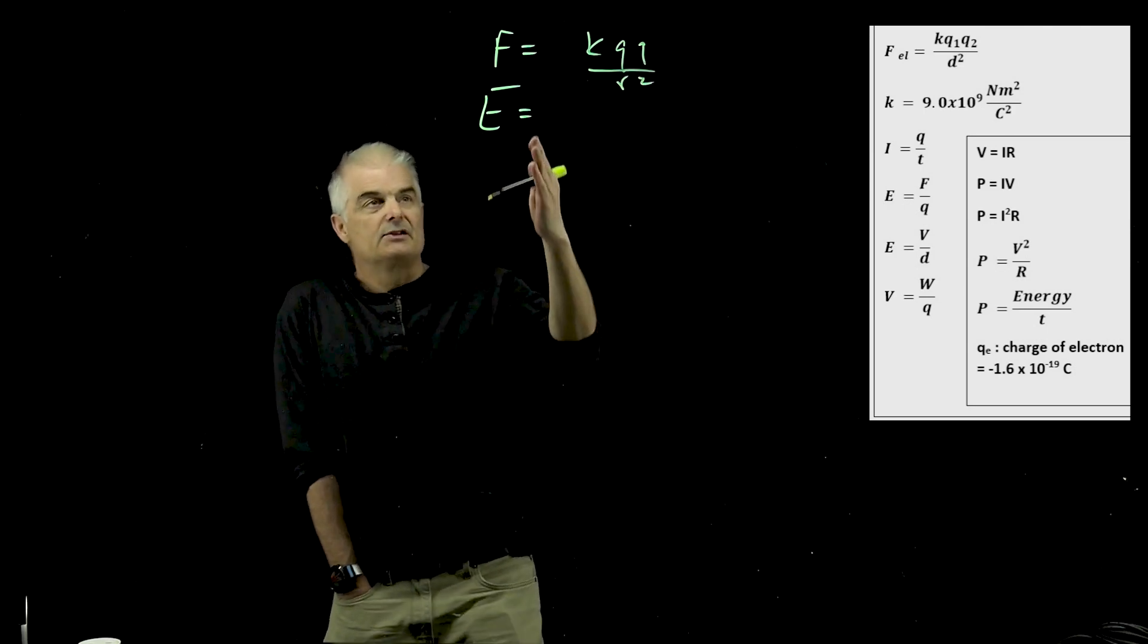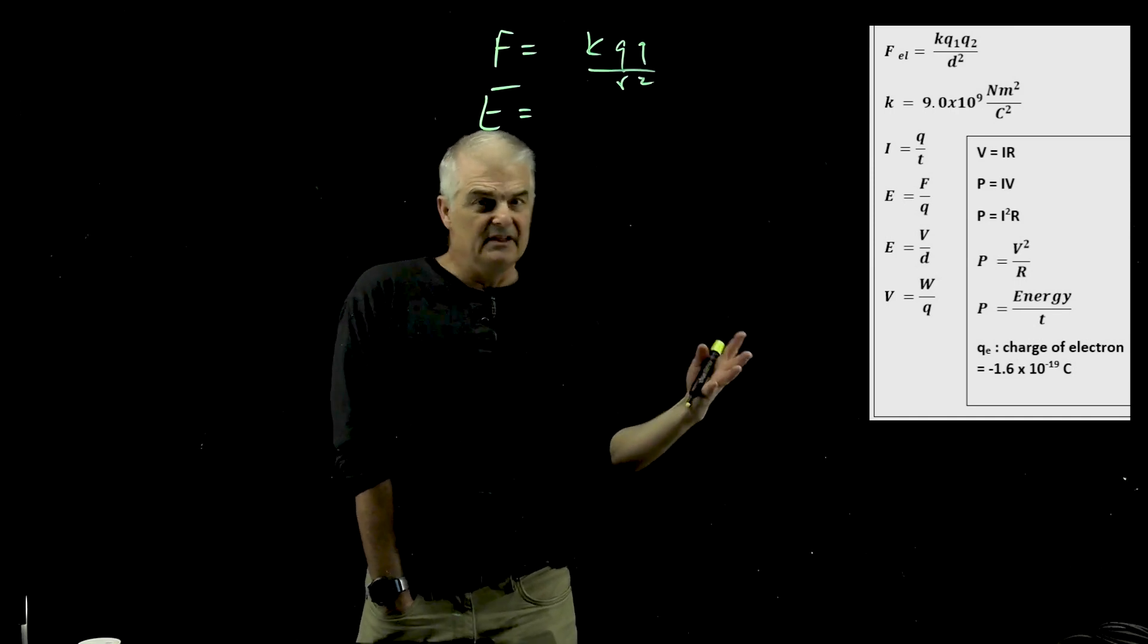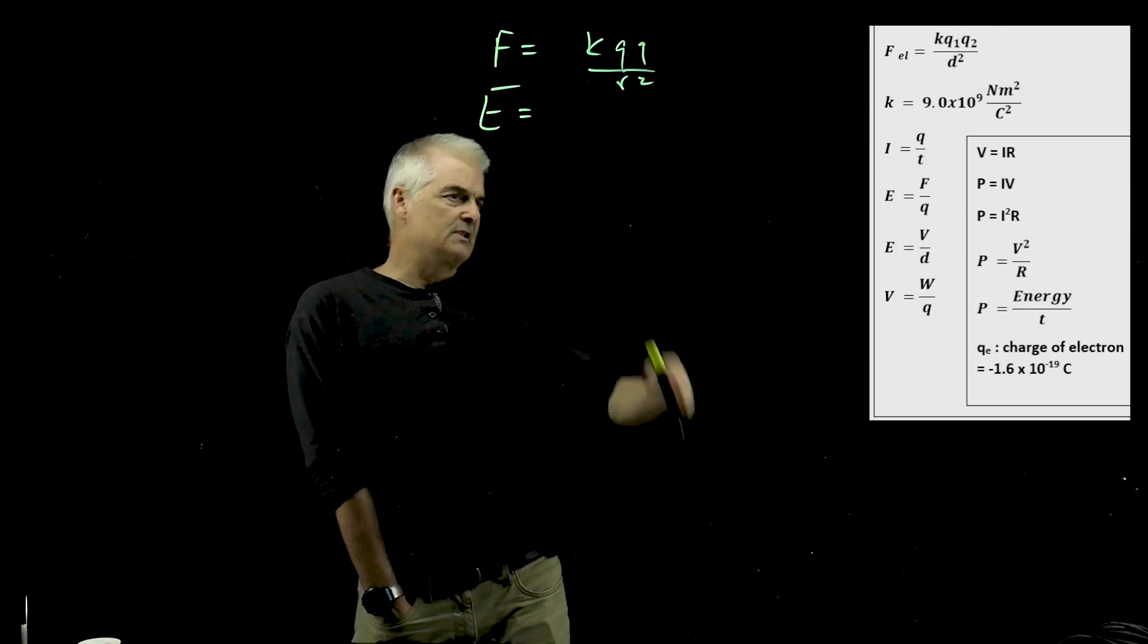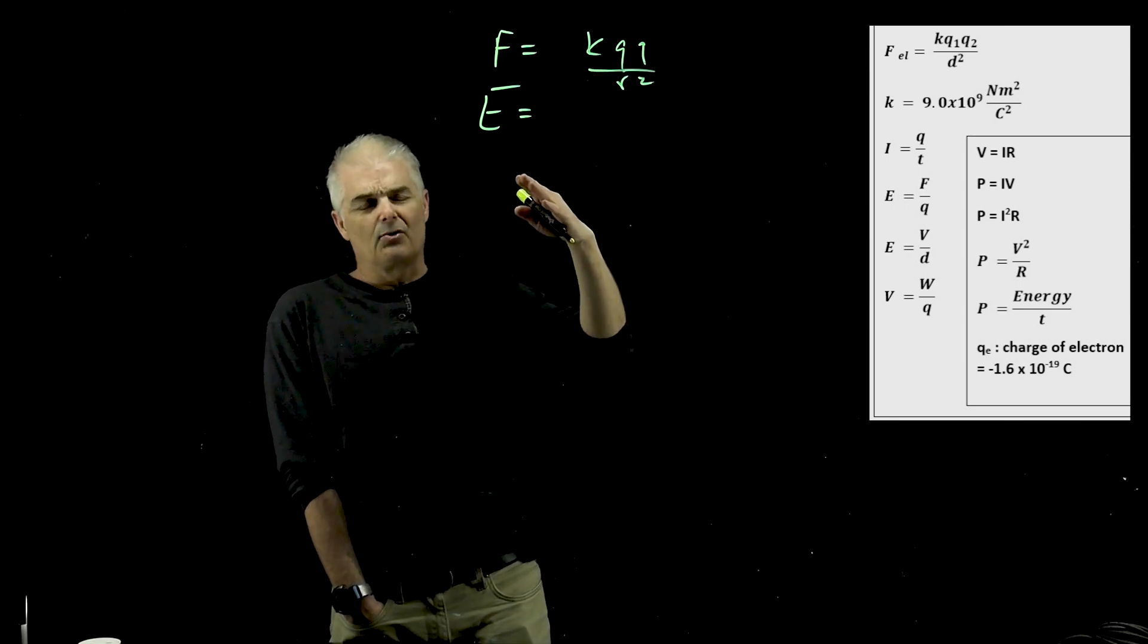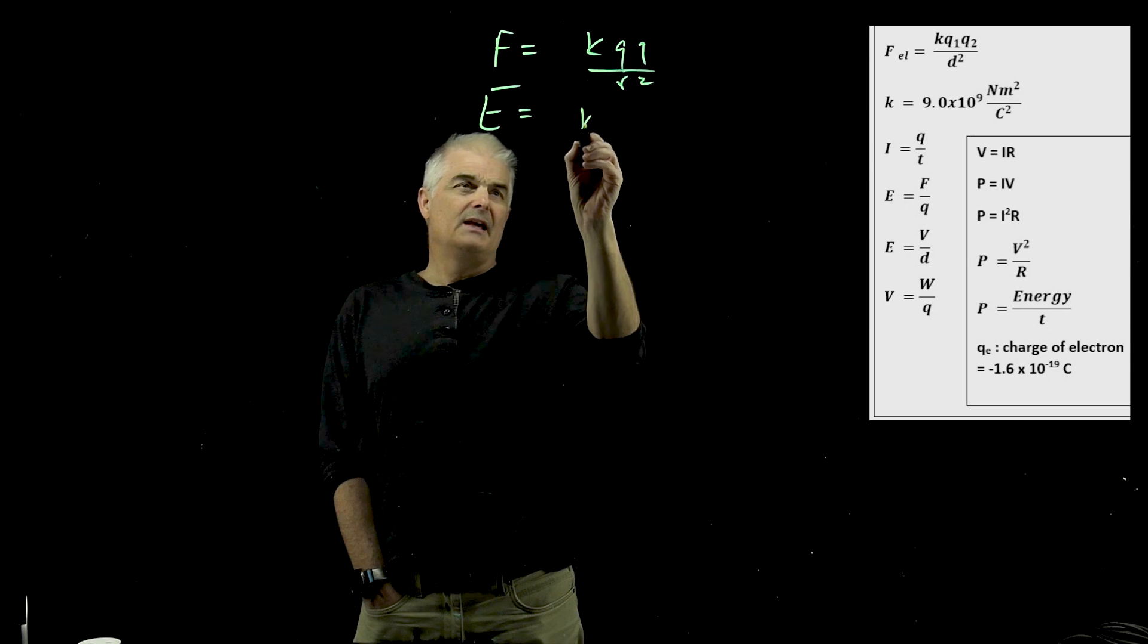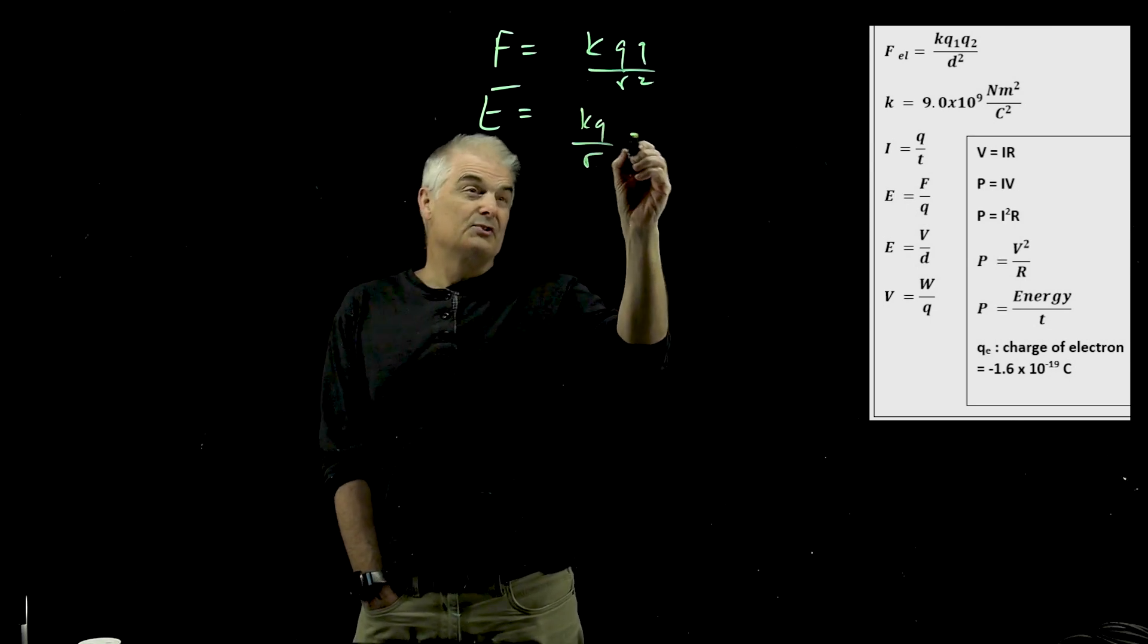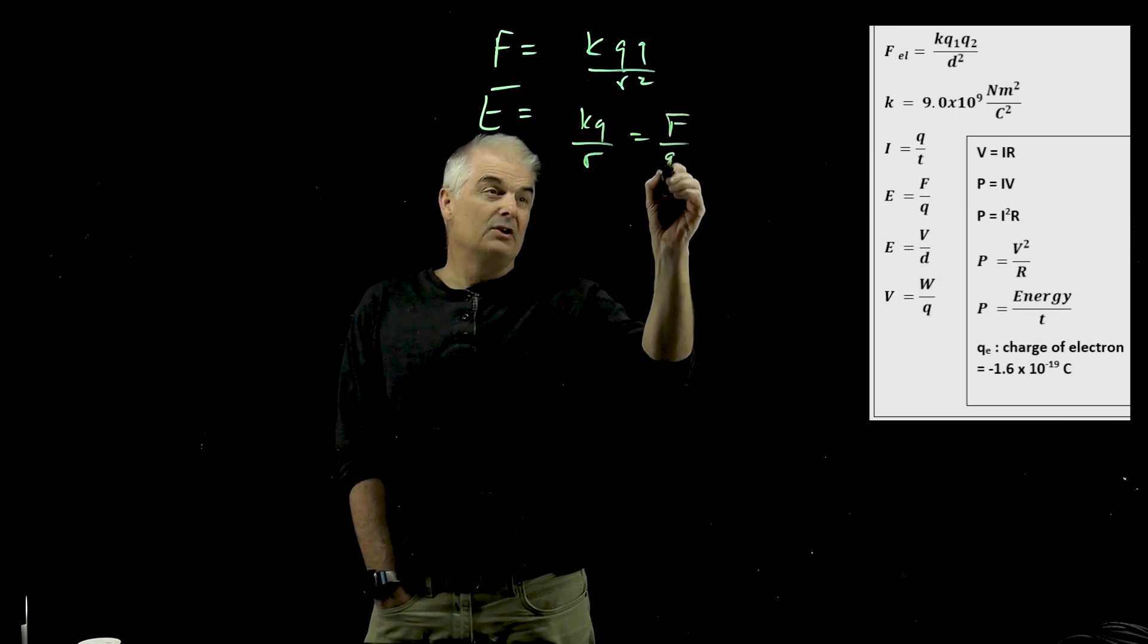That is Coulomb's law, but that leads to the electric field. Remember, the field is how much a charge feels. It's like how steep the slope is. A field is like in gravity, the 9.8. And that's just K, Q over R. But that's one way to write electric field.